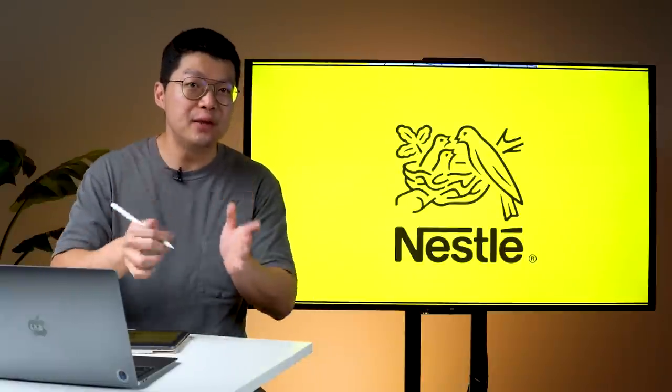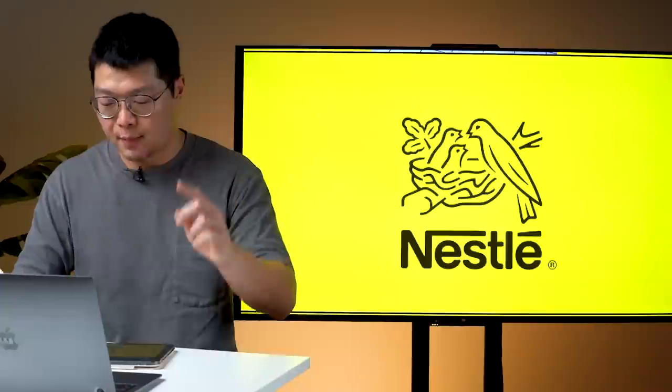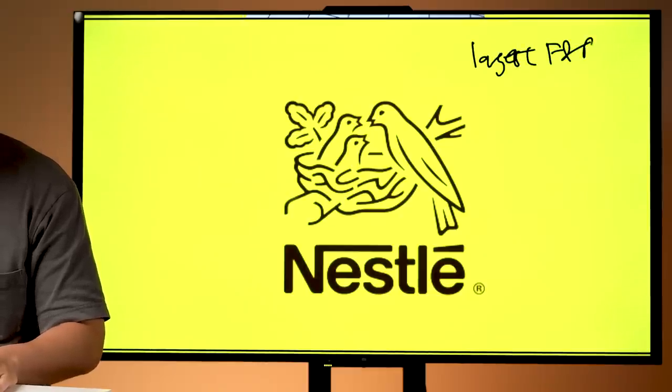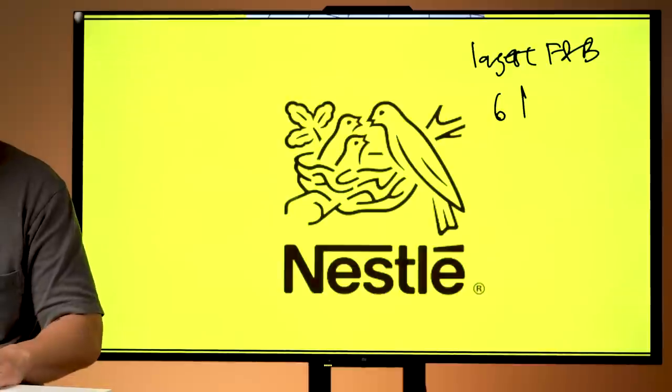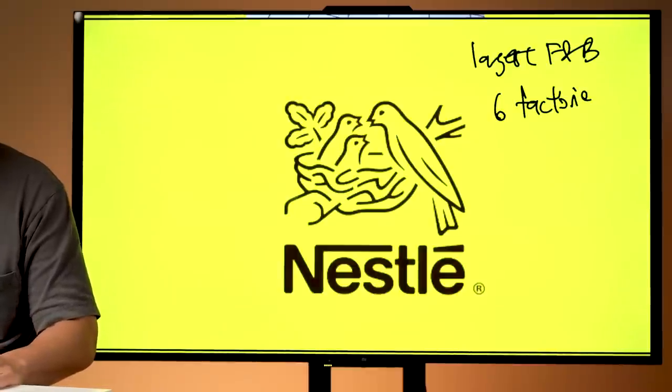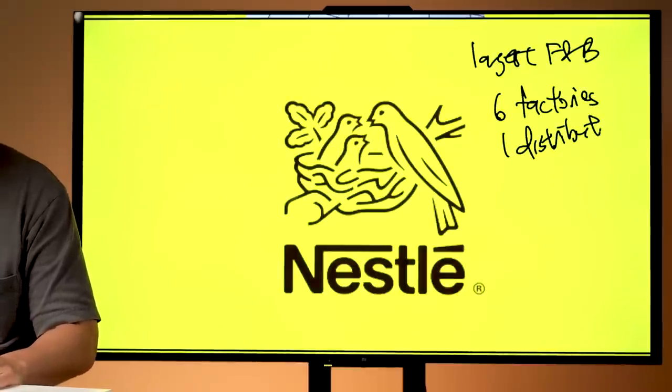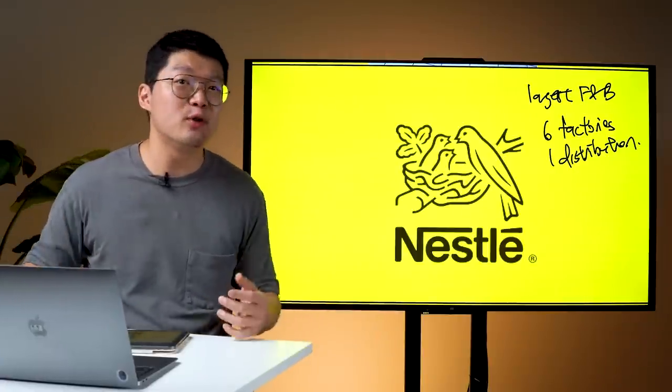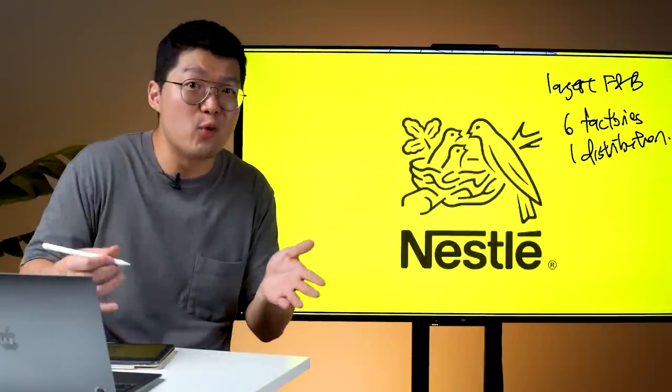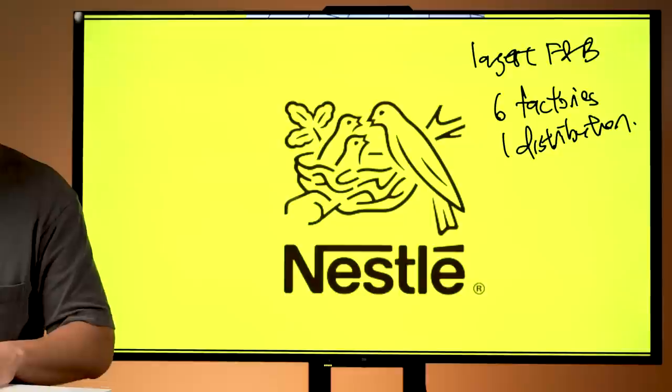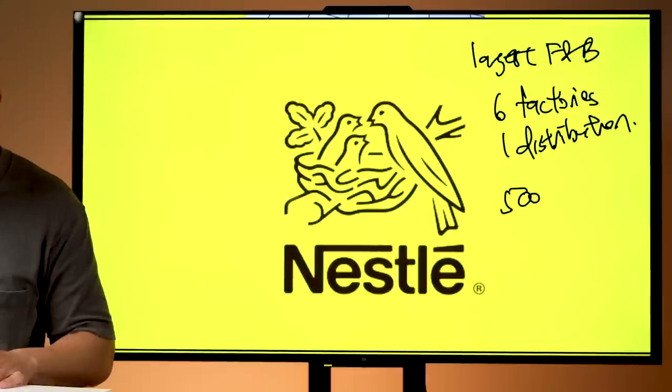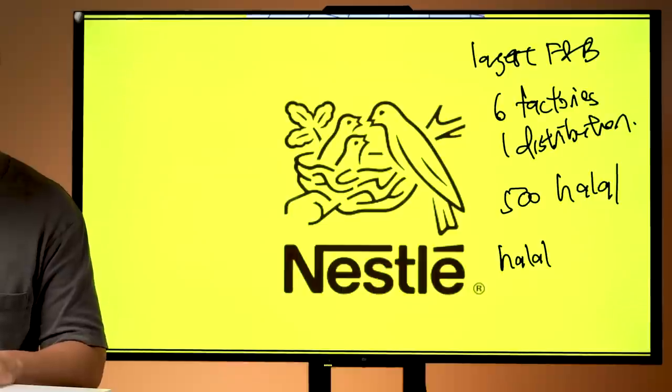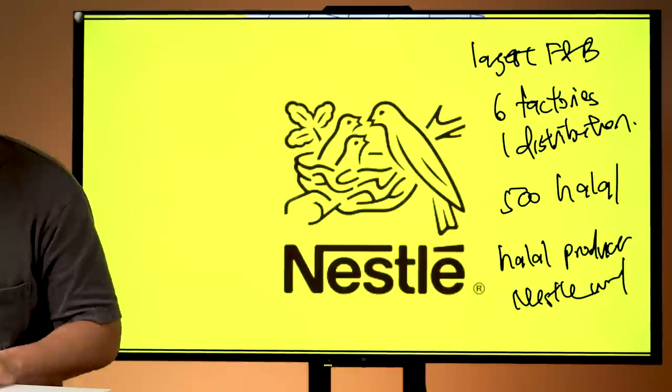So these are the six things that you need to know about Nestle Malaysia Berhad. Number one, they are the largest F&B producer in Malaysia, which consists of six factories and one distribution center. And with the facilities that they have, they are able to produce thousands of products for their customers. And out of these thousands of products, interestingly, 500 of those products are actually halal, which makes them the largest halal producer in the Nestle world.